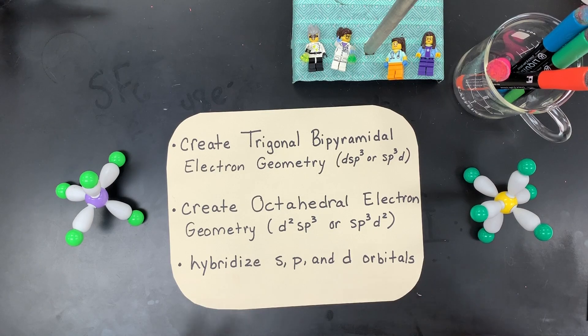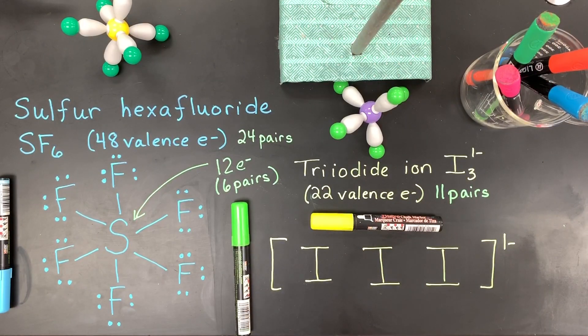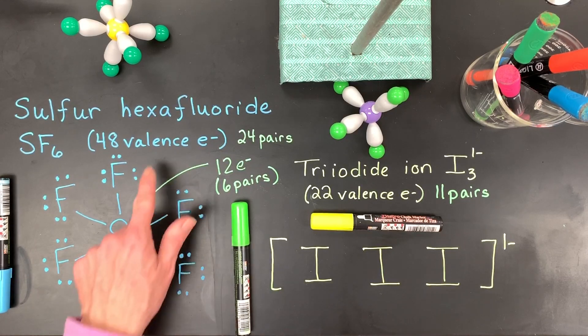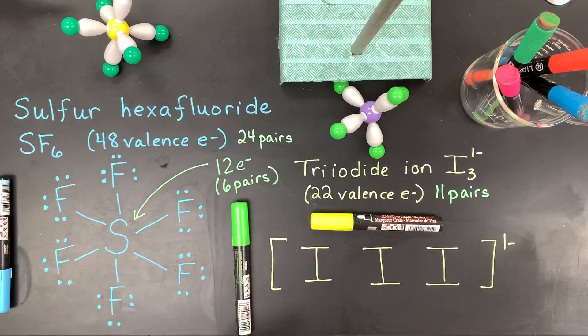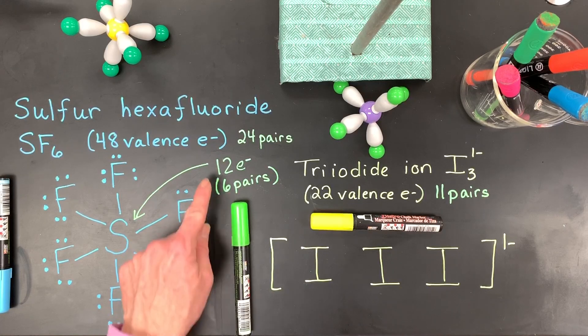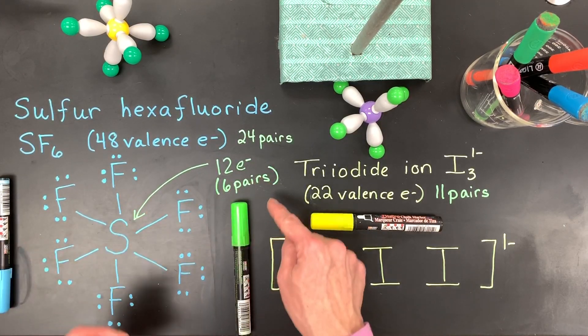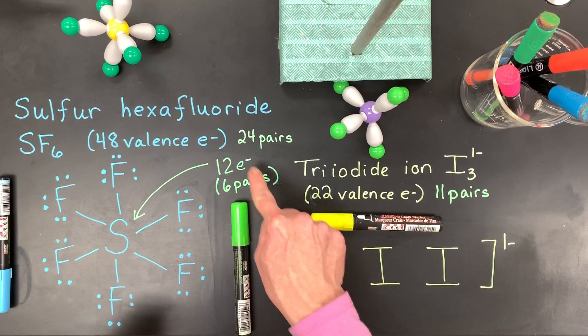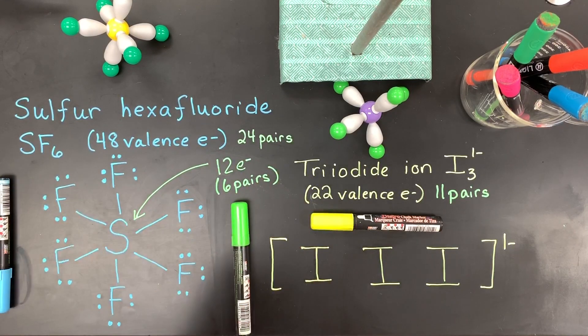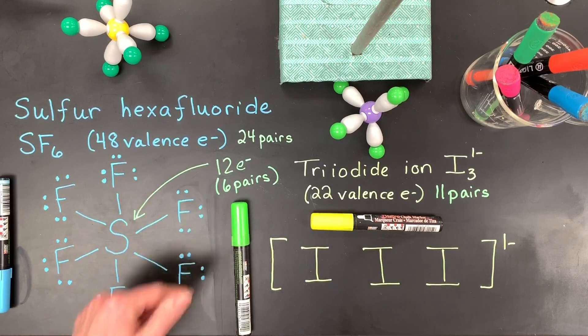So let's go over two examples quickly. So here are those two examples I wanted to work with you. I've already drawn the dot structure for sulfur hexafluoride, which has got 48 valence, 24 pairs. And that center sulfur has 12 electrons bonded to these fluorides or fluorines. And that makes it have six pairs total.